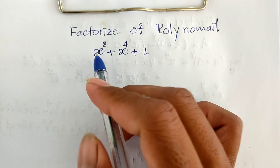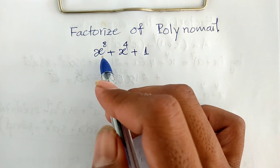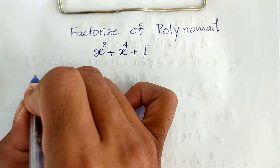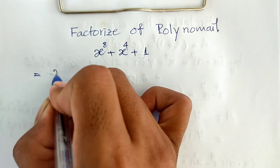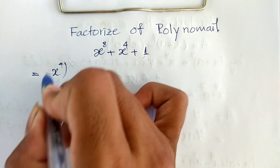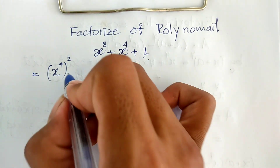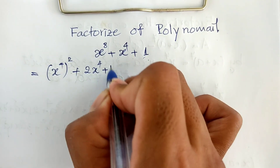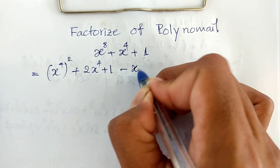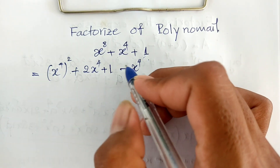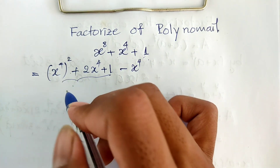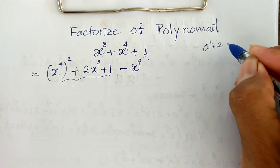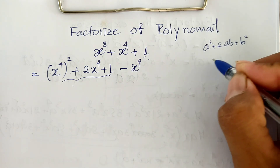Our polynomial is h to the power 8 plus h to the power 4 plus 1. I can rewrite this as h to the power 4 squared plus 2 times h to the power 4 plus 1 and then minus h to the power 4. We use the rule that a squared plus 2ab plus b squared equals a plus b, all squared.